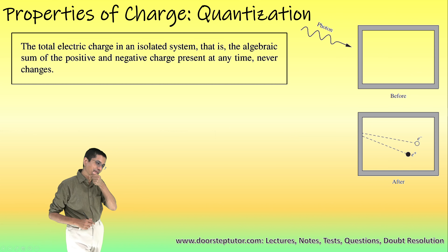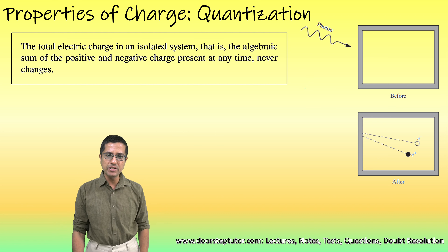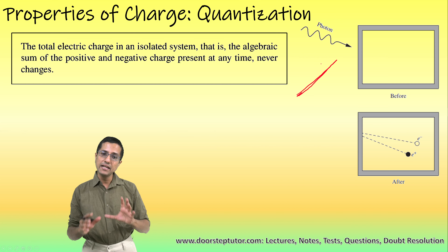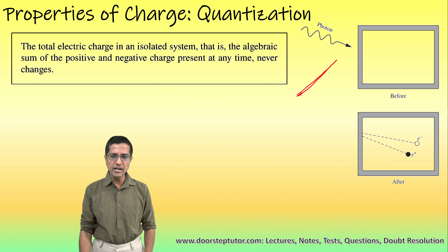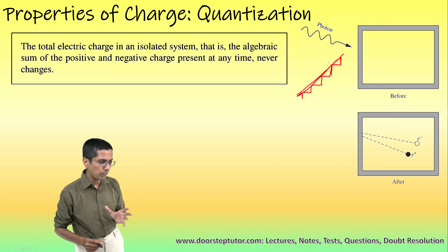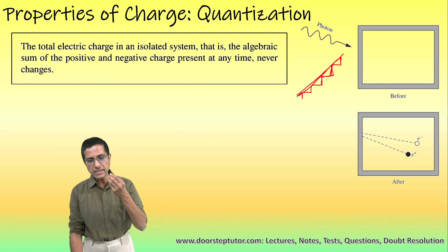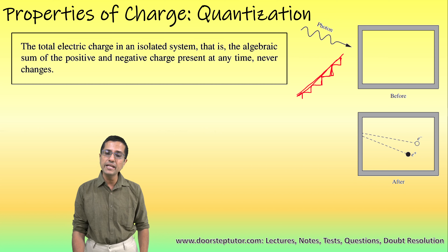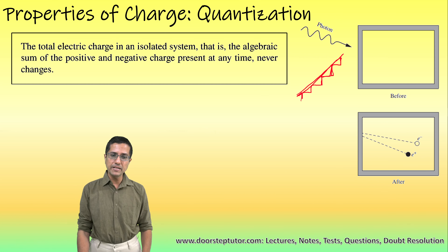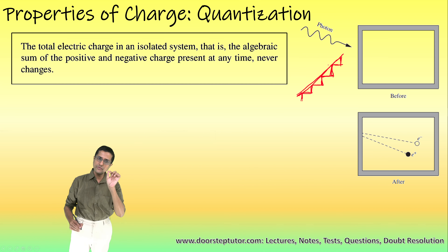The second important property is quantization. A simple example is what you see when you zoom in on a diagonal line on your screen — it is not truly diagonal but formed by individual rectangular pixels. No matter how much you zoom in, you cannot create half a pixel. The precision is limited by the size of the individual pixel. This jagged line effect happens because of a phenomenon known as quantization.